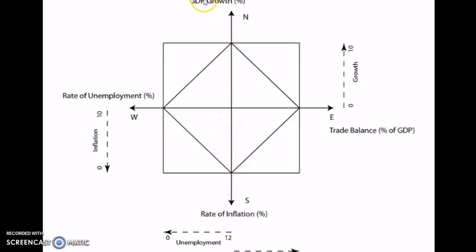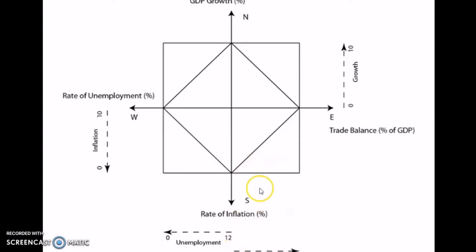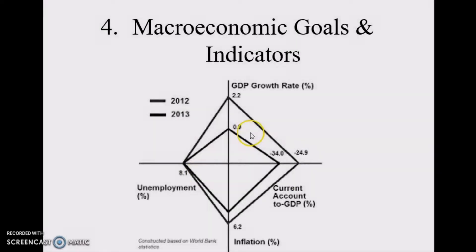GDP growth is positively correlated to the center of the square. On the horizontal axis we have the trade balance as a percentage of GDP, ranging from minus two to four. And we have the rate of unemployment ranging from twelve to zero — which is negatively related to the size of the square, since lower unemployment is better.